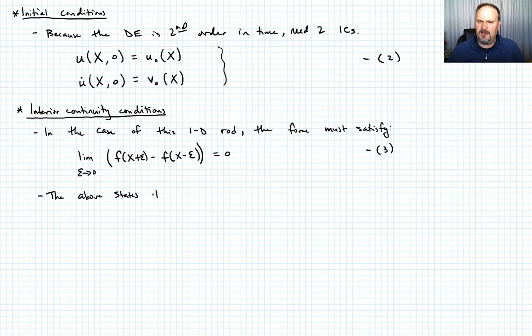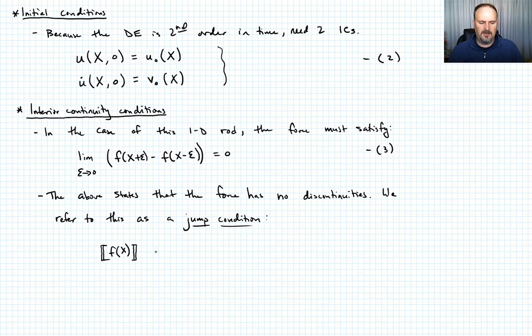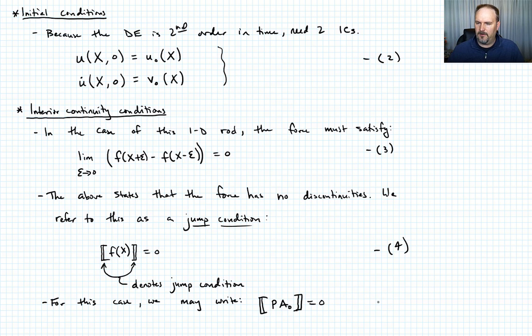We can formally write this jump condition with brackets with a double bar: the jump of f(x) equals zero. These brackets denote a jump condition. For this case, we can write our force term: the jump of P · A_naught equals zero. That's our interior continuity condition.